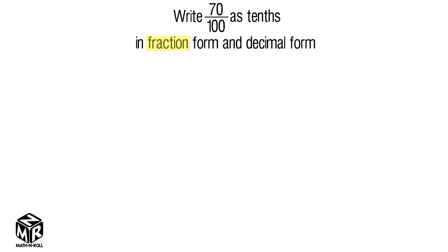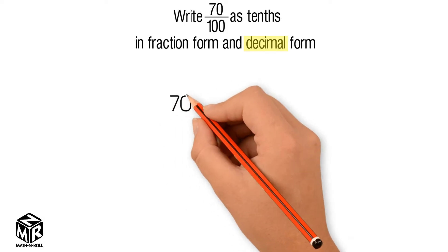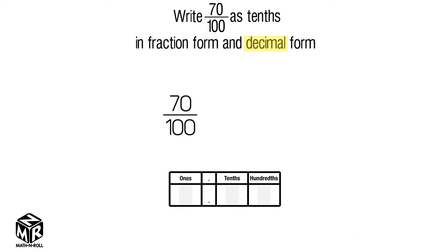Now let's do the same thing in decimal form. Let's write 70 hundredths using the place value chart. We put a zero in the ones place, a seven in the tenths place, and a zero in the hundredths place.